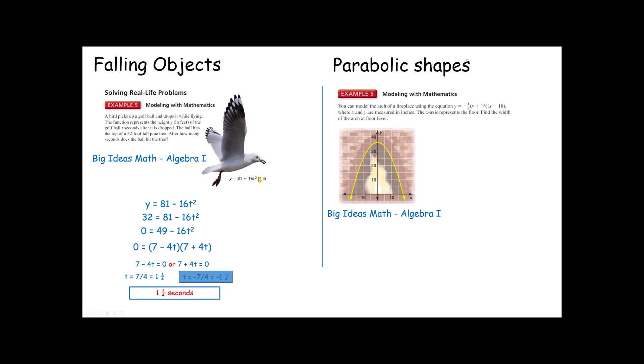You can model the arch of a fireplace using the equation y equals negative 1 ninth x plus 18 x minus 18, where x and y are measured in inches. The x-axis represents the floor. So the x-axis is 0. Find the width of the arch at floor level. The width of the arch at floor level. Now this is nice because this is already in factored form for you. The only thing you need to realize is that at the floor, your y value is going to be 0. So you take your function. Notice that we're looking for those two points right there. So we're going to take this function and we're going to set it equal to 0 because those are 0 inches high because they're on the floor.